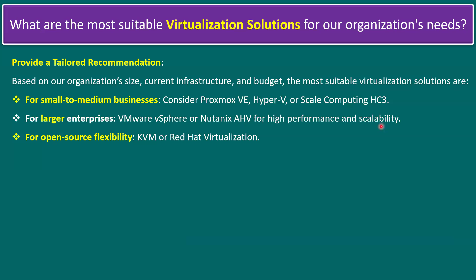For testing and proof-of-concept scenarios, we can propose open-source solutions like Red Hat KVM or Red Hat Virtualization. Red Hat recently also launched OpenShift Virtualization, which requires a license but offers a 60-day evaluation period, allowing you to explore how it works. These are just a few examples — we can explore many more virtualization solutions based on specific customer or organizational needs.